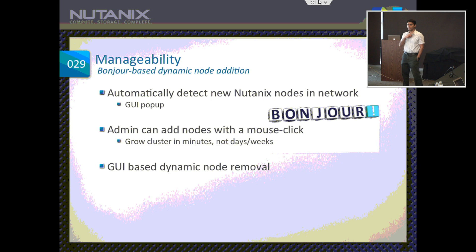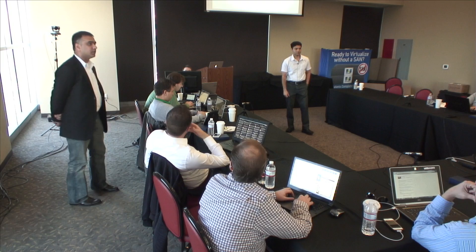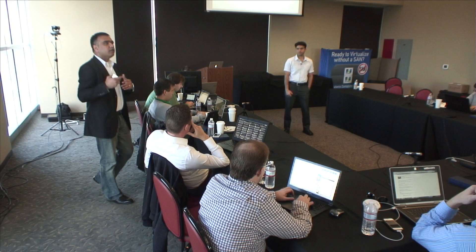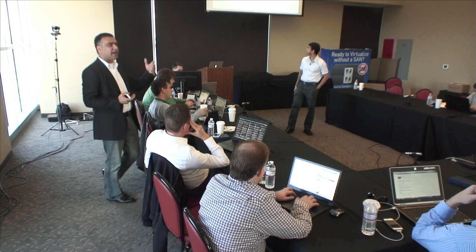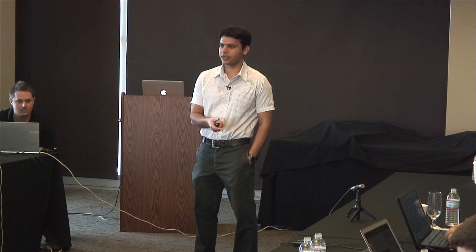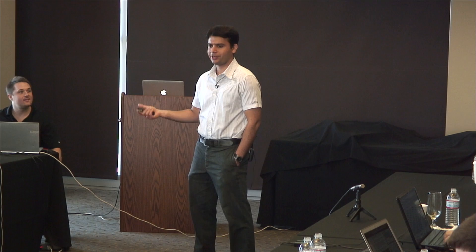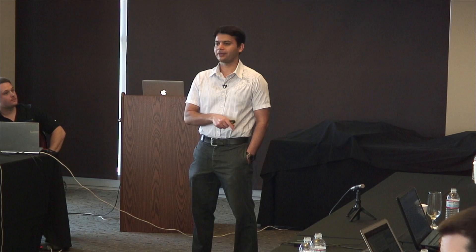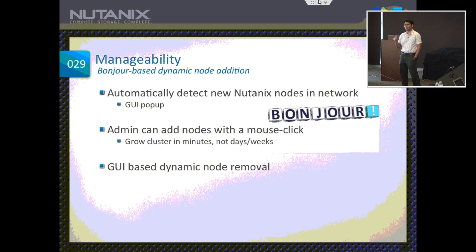Storage rebalancing is automatic. For compute, VM placement policies are up to the admin — if he wants to move VMs automatically that can happen, but we don't want to be in the path of DRS and other VMware tools. We learn and adapt: if VMware DRS moves a VM to a new node, we'll move the data close to it. Node addition takes minutes — we joke that installations take half an hour, with 25 minutes for coffee. Node removal is also through the GUI — click to remove a node, the system ensures no leftover single replicas remain, then lets you take it offline.